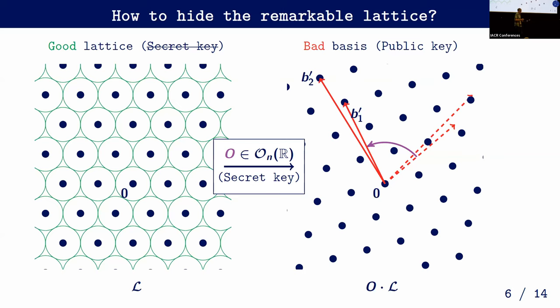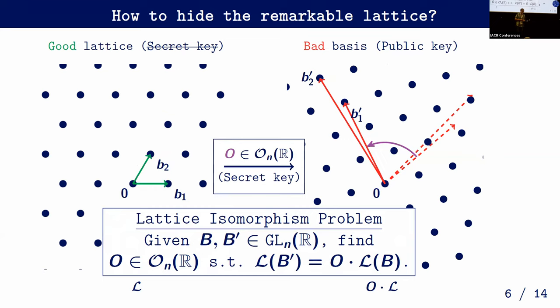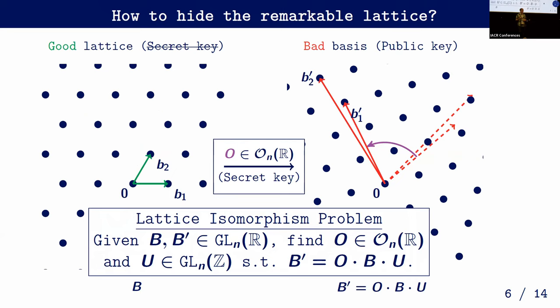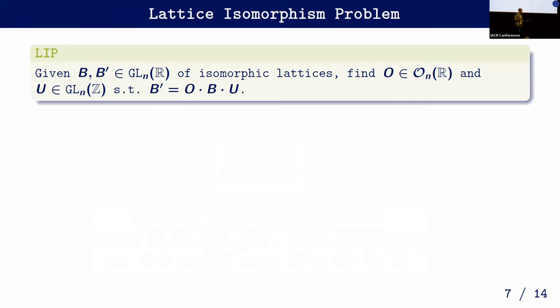The key recovery problem — recovering this orthonormal transformation — is exactly the Lattice Isomorphism Problem (LIP). This problem has already been studied since people began studying lattices. Given any two lattices that are isomorphic, it asks you to find the orthonormal transformation mapping one to the other. In terms of bases, you need to find the orthonormal transformation O and the unimodular transformation U such that B' = O · B · U. The presence of both transformations O and U is what seems to make the problem hard.